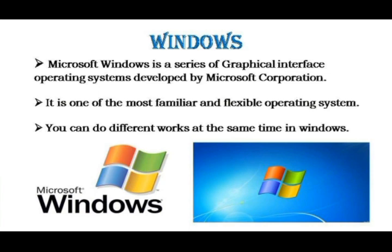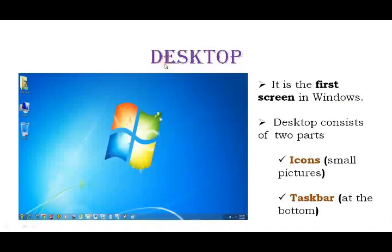Next, we can see Windows briefly. First, we can see the desktop. Second, we can see program windows. The desktop is the first screen in Windows. When you turn on the computer, the first screen you see is called the desktop.